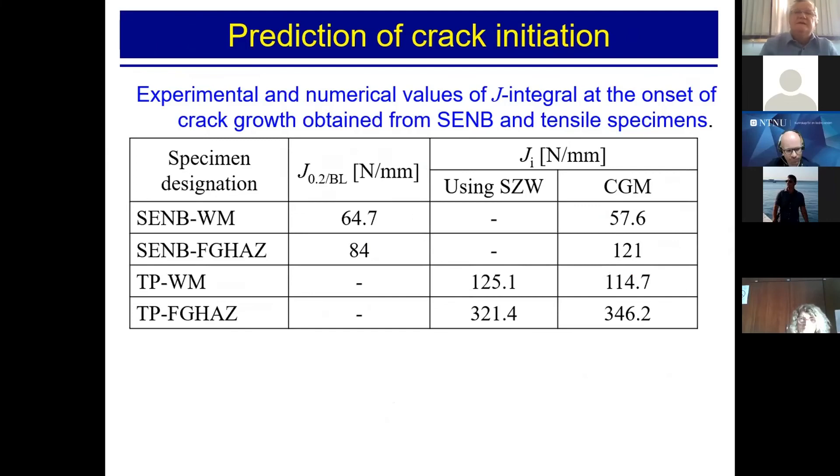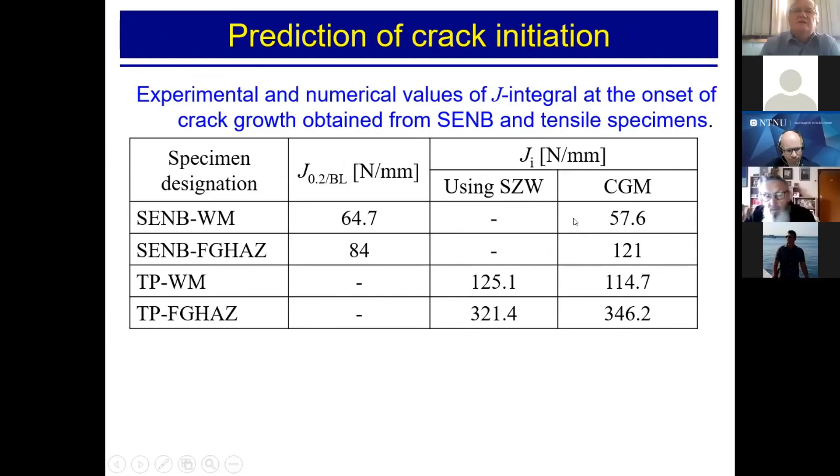Now you can see some results on the way to get this comparison, which is very important. And it indicates that complete Gurson model, which predicts J critical. So for the initiation, comparisons are 57.6 versus 64.7, then 121 versus 84. Good enough in both cases. And even better in case of tensile panel,